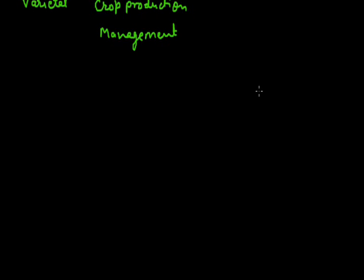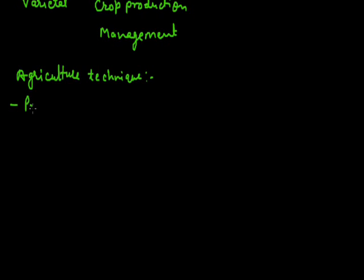What are the steps of agriculture practices? First of all, we briefly discuss about the agriculture practices or techniques used for the production of crops. The first technique is preparation of soil, in which we prepare the soil for cropping purposes.